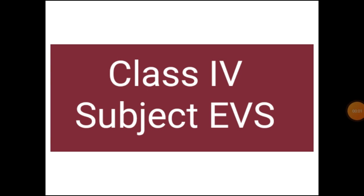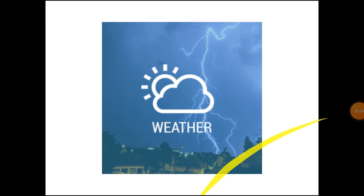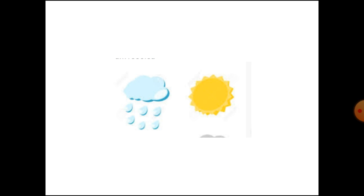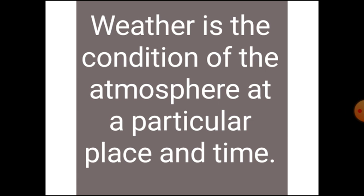A very good morning class. Today we are going to study about weather. My dear students, we come across the brightly shining sun on one day and it starts raining the next day. These different conditions at a place are called weather. Or we can say weather is the condition of the atmosphere at a particular place and time.